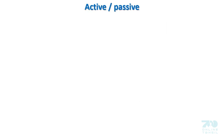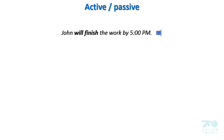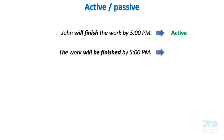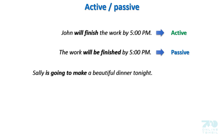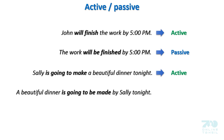Active and passive. Examples: 'John will finish the work by 5 p.m.' (Active). 'The work will be finished by 5 p.m.' (Passive). 'Sally is going to make a beautiful dinner tonight.' (Active). 'A beautiful dinner is going to be made by Sally tonight.' (Passive).